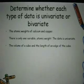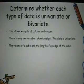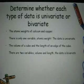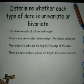The volume of a cube and the length of an edge of the cube. There are two variables — volume and length — so the data is bivariate.